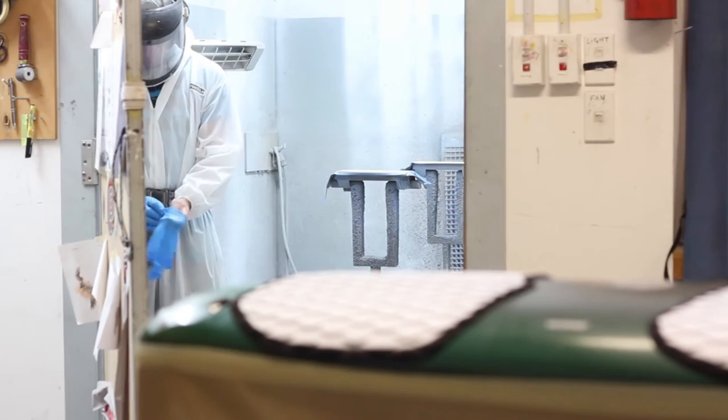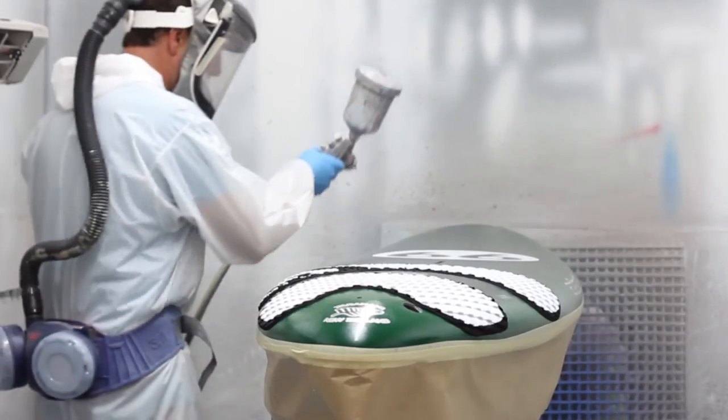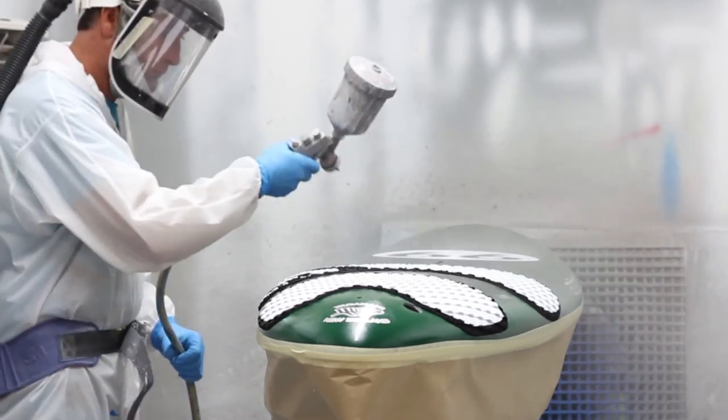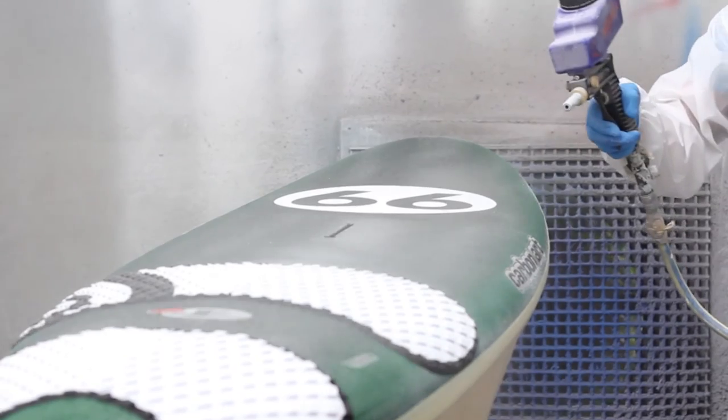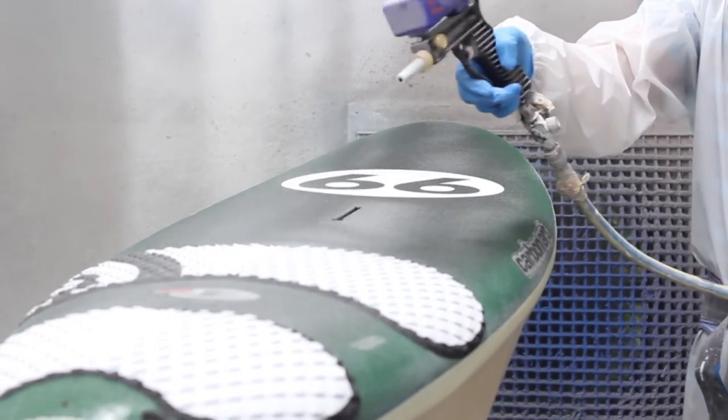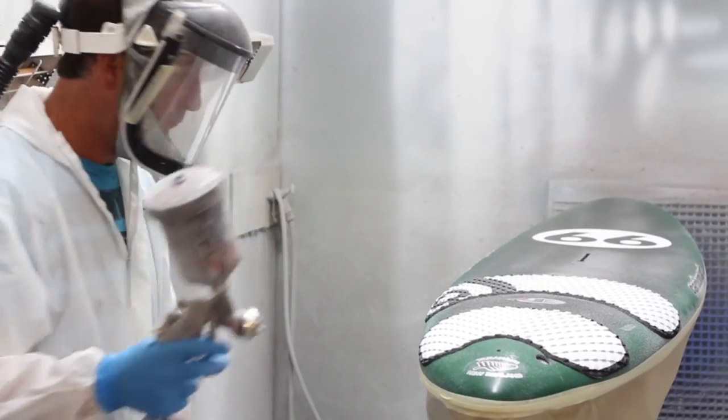So the final stage of building a board is to apply the non-skid or texture to the deck of the board. We use an acrylic urethane clear coat as an adhesive and a ground acrylic dust which is made from recycled acrylic lenses. The dust is sprinkled evenly over the deck and then a light amount of acrylic urethane sprayed over the top of that.